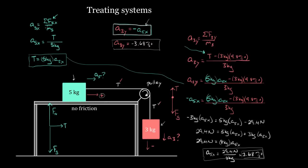Turns out there's a trick. After you solve this problem the hard way, with a five kilogram mass and a three kilogram mass, when you find the acceleration, you get that the acceleration of the five kilogram mass is just 29.4 divided by eight kilograms. When you do enough of these you might start realizing: 29.4 newtons — that was just the force of gravity pulling on the three kilogram mass, the only external force propelling the whole system forward. And eight kilograms — that's just five plus three kilograms.